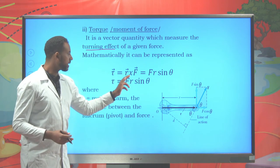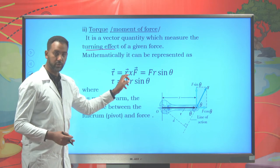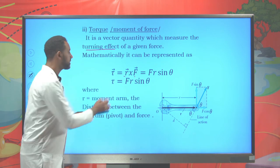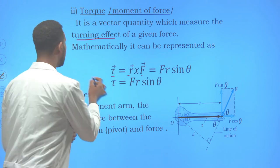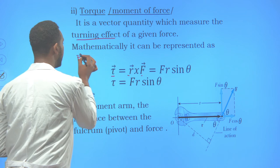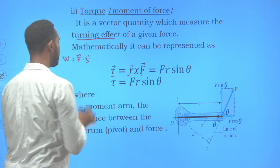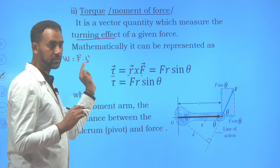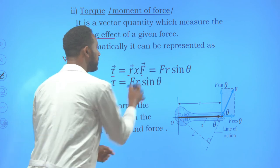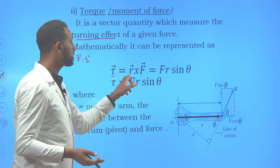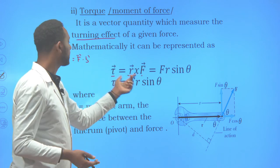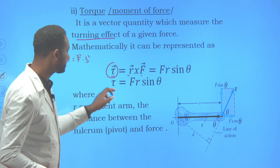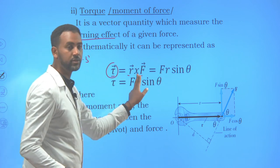Mathematically, torque is expressed as the moment arm, or displacement, in a cross product with force: τ = r × F. Previously in work, you learned that the dot product of force and displacement gives a scalar quantity known as work. Since it is a dot product, the result is a scalar. But in this case we are dealing with a cross product. The cross product of these two vectors gives another vector, which is known as moment of force or torque. And when determining the magnitude: τ = rF sinθ, where θ is the angle between the force and the moment arm.